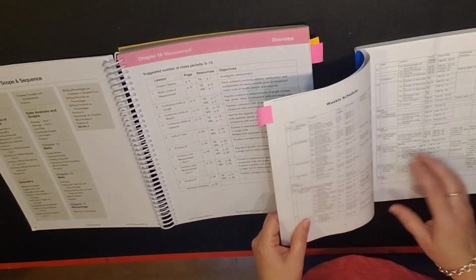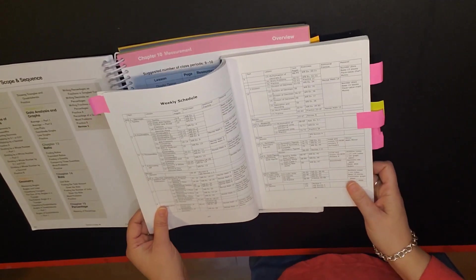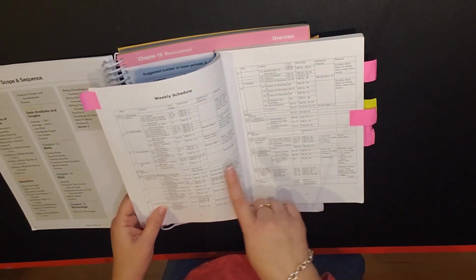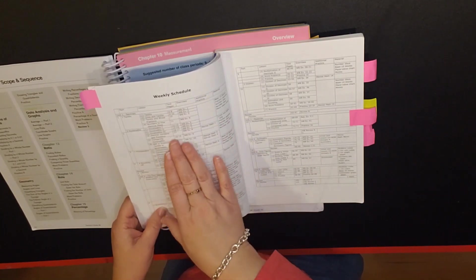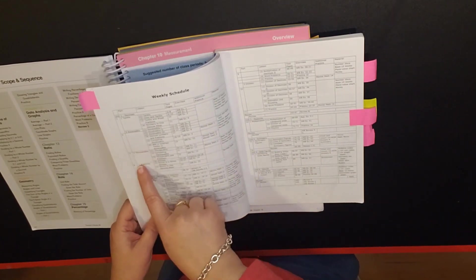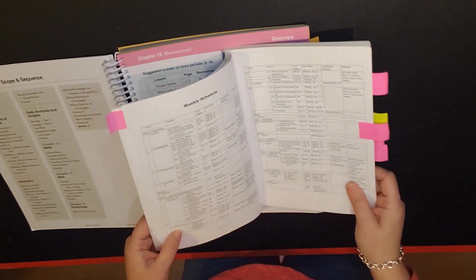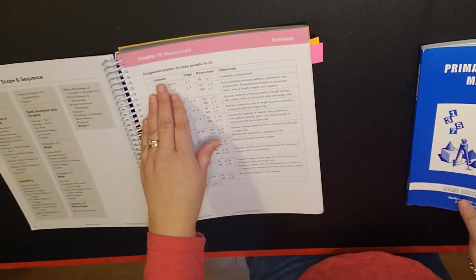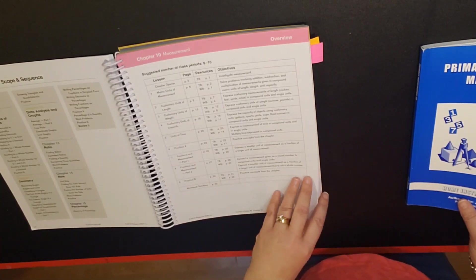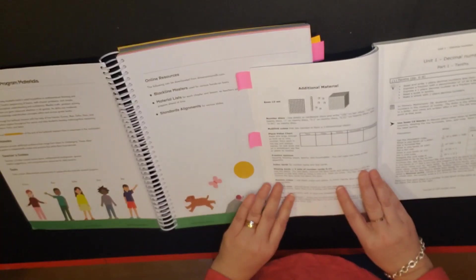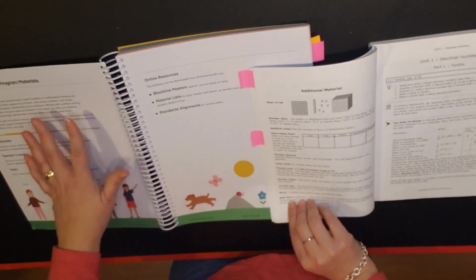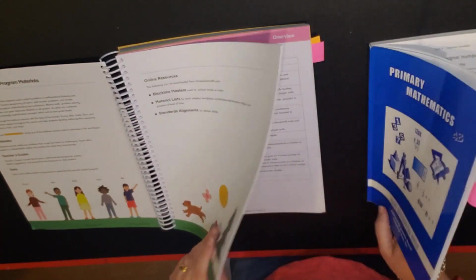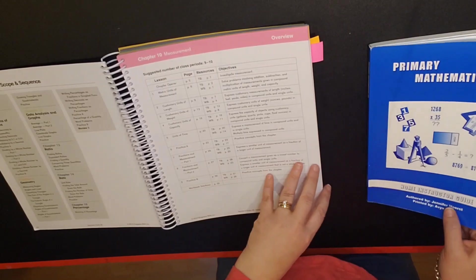The primary mathematics has a weekly schedule so you can look at the semester at a glance to see how many days they're planning for each of the different units, whereas for dimensions you have to turn to that unit and then it will tell you how many lessons are within each unit. Both have additional material information, so dimensions has additional materials and primary has additional materials. They tell you exactly what you will be needing.